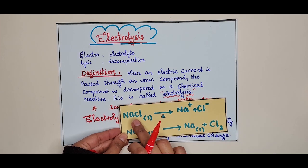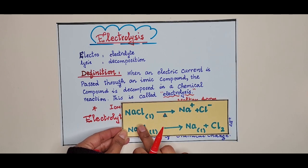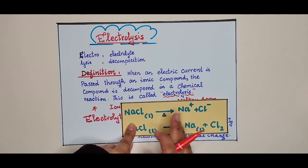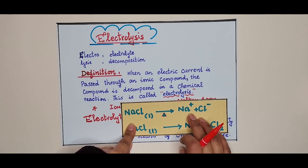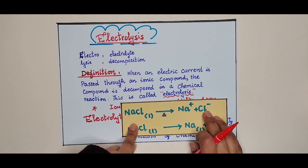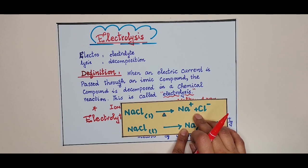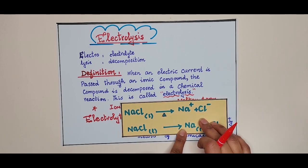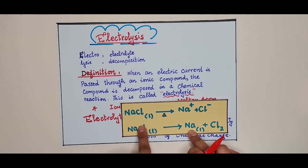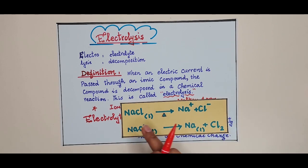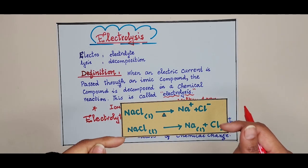To give a better understanding: in molten form, sodium chloride is ionized into sodium and chloride ions. When an electric current is passed through this ionic compound in ionized form, these ions are decomposed. The reaction produces sodium and chlorine gas — sodium chloride is decomposed into its separate individual components. This process is called electrolysis.